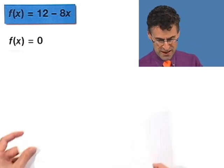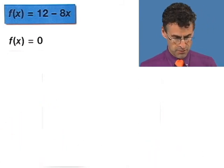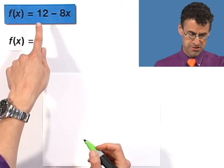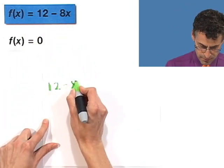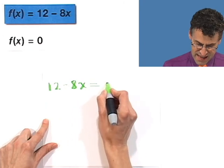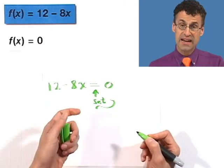So for example, in this particular case, what would I do? I would take the function, which is 12 minus 8x, and I set it equal to 0, and I now solve for x.